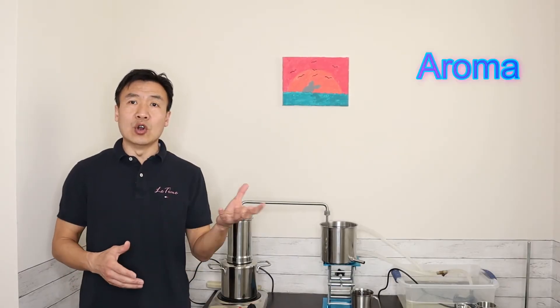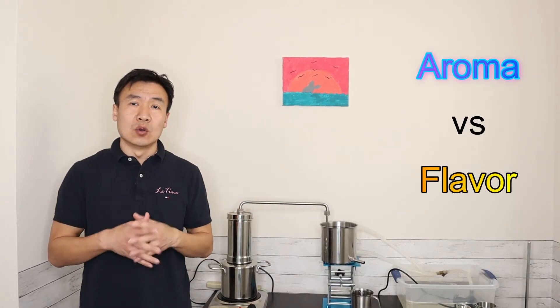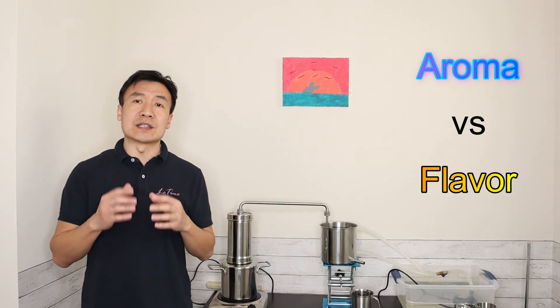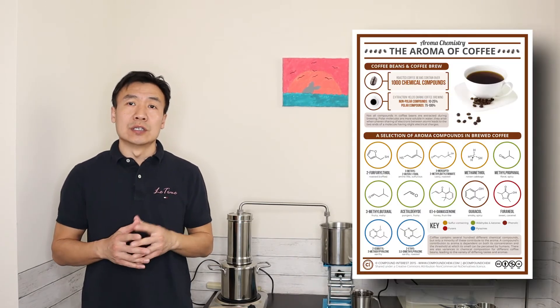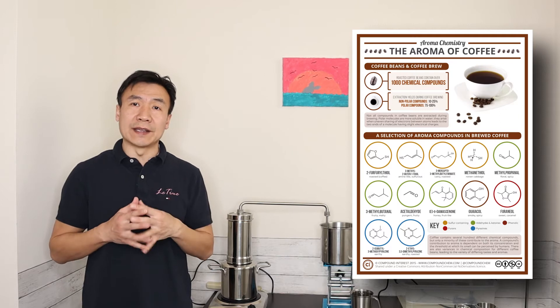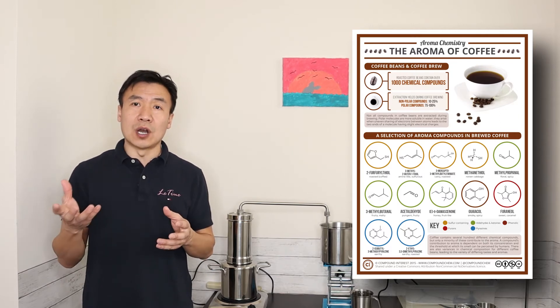What is the difference between aroma and flavor? Within the coffee beans, there are thousands of chemicals. One group called volatile organic compounds, the second group called non-volatile organic compounds. Aroma belongs to the first group.